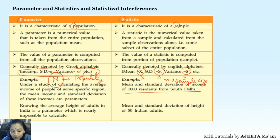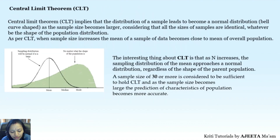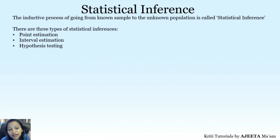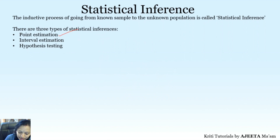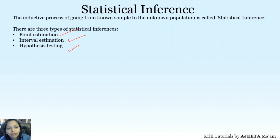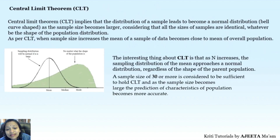Statistical inference is the inductive process of going from a known sample to an unknown population. There are three types of statistical inferences: point estimation, interval estimation, and hypothesis testing. These three are what we are going to study for numericals. Before moving to those, there is one very important theorem — the central limit theorem.